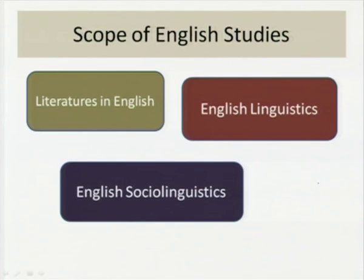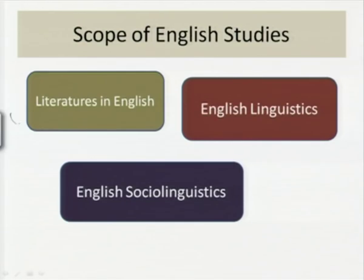English language and literature is sought by many to be supplanted with the phrase 'English studies,' so as to remove the idea that English language and literature is something only written in the mother country or in the Anglo-American scenario. The scope of English studies — which is the subject of the next lecture — includes literatures written in English, not just literature from England, and also the study of English linguistics and English sociolinguistics.